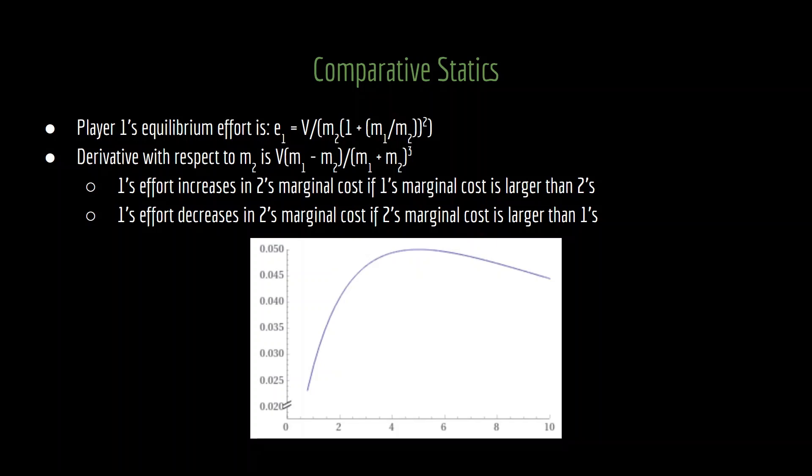The more interesting comparative static is what happens with player one's effort as you increase player two's marginal cost. Here, the intuition is not obvious. On one hand, by increasing player two's marginal cost, you might think that player one is seeing player two as vulnerable, and is willing to exert more effort to exploit that vulnerability. On the other hand, because player two's marginal cost is going up, perhaps its effort is going down, and perhaps then player one might want to decrease its effort by a little bit, although not much, to save on some of the costs of exerting effort itself.